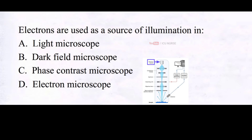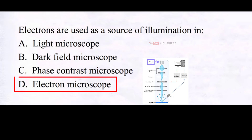Electrons are used as a source of illumination in A. Light Microscope, B. Dark Field Microscope, C. Phase Contrast Microscope, D. Electron Microscope. And the correct answer is D. Electron Microscope.